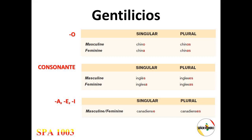Most adjectives used to express nationality end in the letter O, so they have four forms. For example, Chinese: for a male Chinese we say chino; for a female Chinese we change the final O to A and say china; for more than one Chinese, chinos; for more than one female Chinese, chinas. So: chino, china, chinos, chinas.